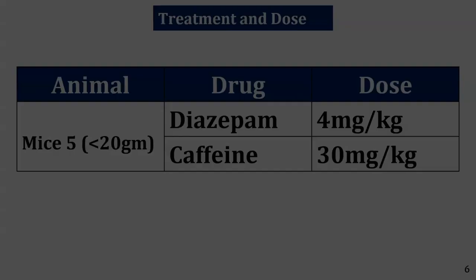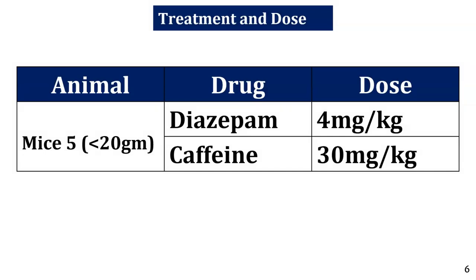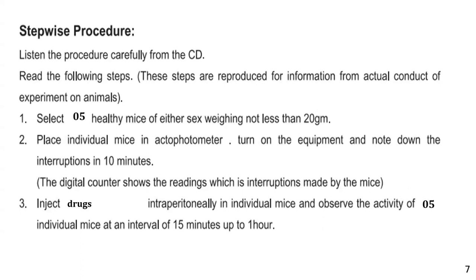For this experiment, we use five healthy mice weighing not less than 20 grams. The drug diazepam has a dose strength of 4 mg/kg, and the second drug is caffeine — categorized as a CNS stimulant — at 30 mg/kg. The animals are placed in the activity chamber of the actophotometer, the reading is counted, then the drugs are administered via the intraperitoneal route according to the time duration.